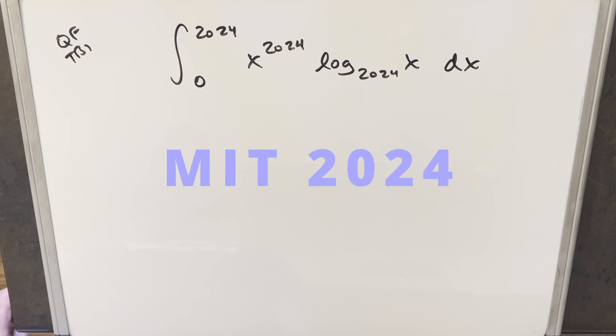Okay, we have here today another integral from the MIT Integration Bee 2024. This one is from qualifying round tiebreaker number one. We have the integral from 0 to 2024, x to the 2024 log base 2024 of x dx.